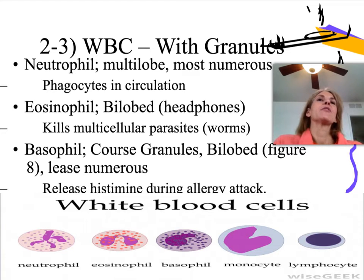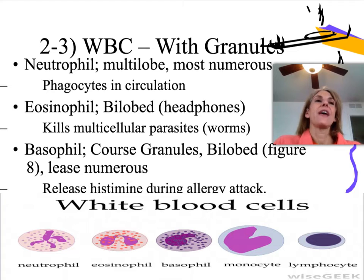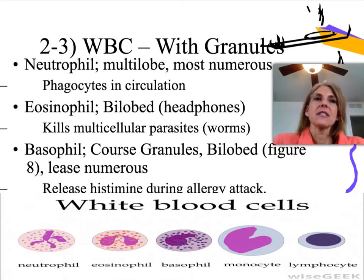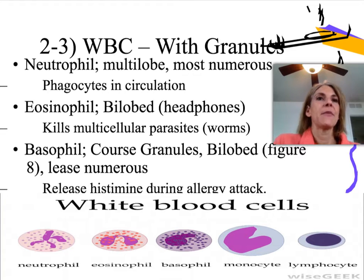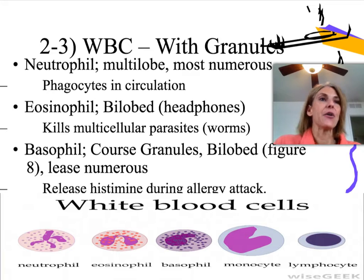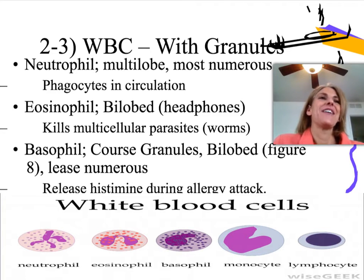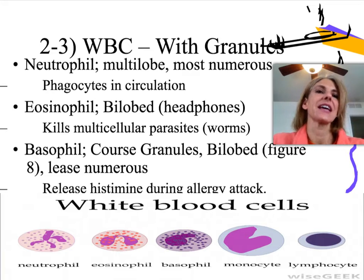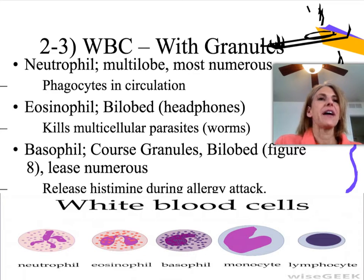Eosinophils — remember 'syn pin,' and pin is a type of worm. So they affect parasitic worms or multicellular parasites. They are the second picture in the graph at the bottom. They have a bilobed nucleus, meaning it has two parts to it — that's the one that looks kind of like earmuffs or headphones.